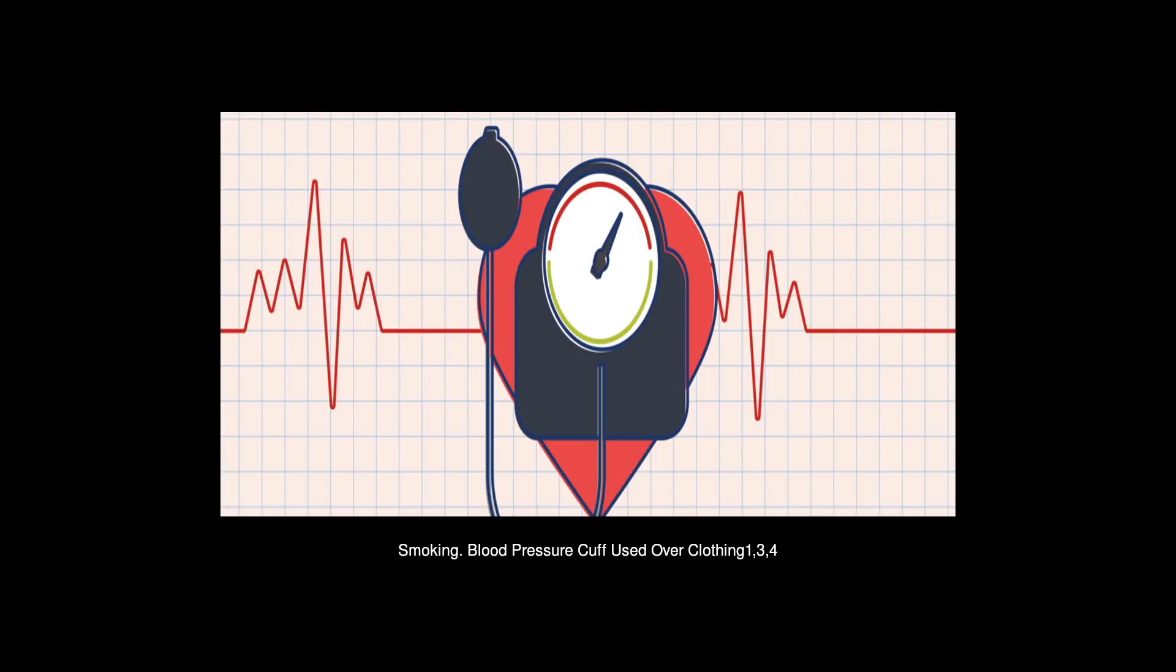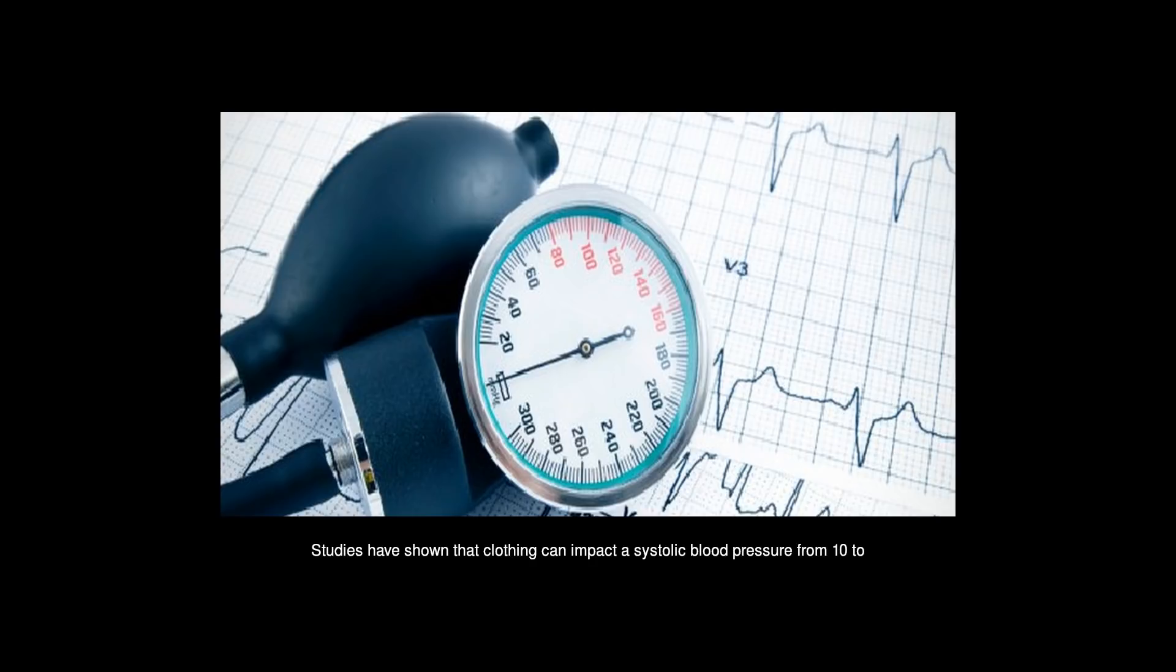Blood pressure cuff use over clothing. When having your blood pressure measured, the cuff should always be placed directly on your arm. Studies have shown that clothing can impact a systolic blood pressure from 10 to 50 mmHg.